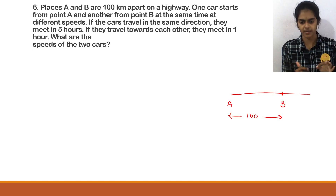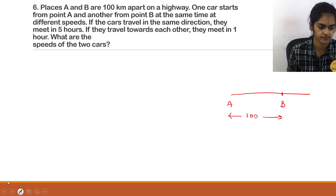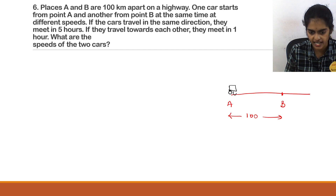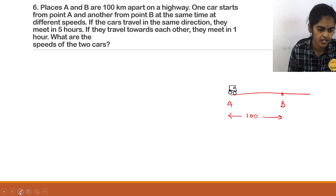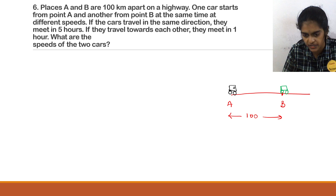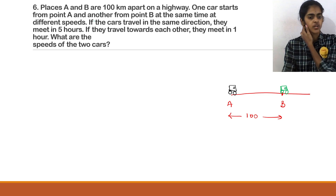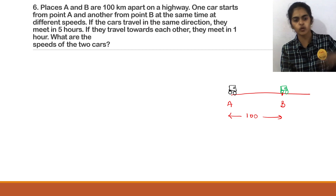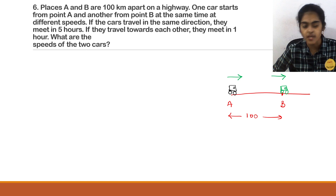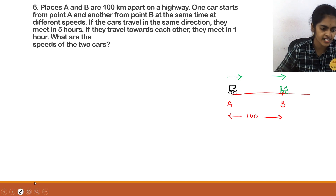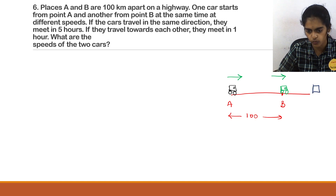One car starts from point A and another car starts from point B. If both cars are travelling in the same direction — for example, if the first car is travelling to the right, the second car is also travelling in the same direction — then they meet in 5 hours, somewhere at a point, say point C.